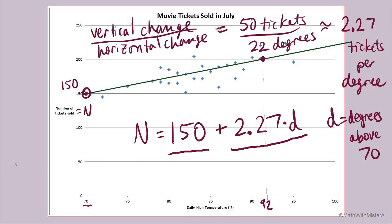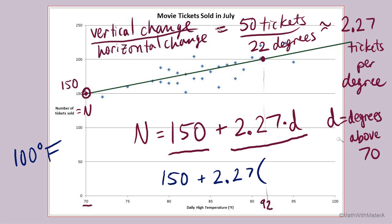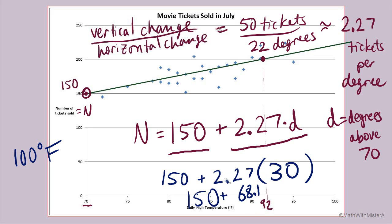We can use this equation to answer a question like: how many tickets would you expect to be sold if the temperature reached 100 degrees Fahrenheit? Our model starts at 150 tickets and increases by 2.27 for each degree above 70. At 100 degrees, we are 30 degrees above 70, so we multiply 30 times 2.27, which equals 68.1, then add that to 150. The total is about 218 movie tickets sold if the temperature reaches 100 degrees Fahrenheit, according to our linear model.